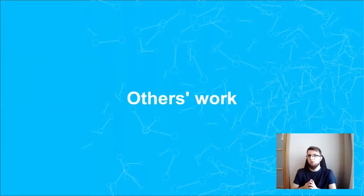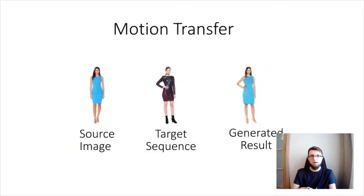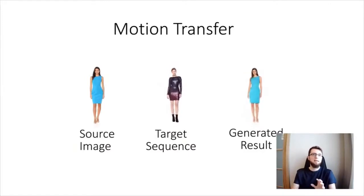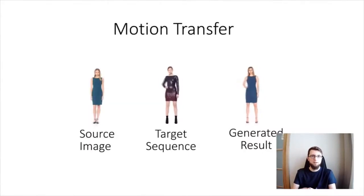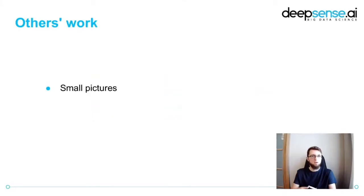Before I show you our solution, I'd like to present one of the interesting approaches from the literature. This is work from the Saarland Informatics Campus, presented at the ECCV 2020 conference in late August 2020. What they do is re-render a human from a single image, allowing them to transfer a cloth to a person in any position. It's very impressive. However, there are two details: they work on small pictures, and they work on plain clothes — clothes without patterns.